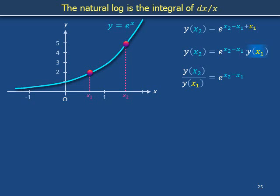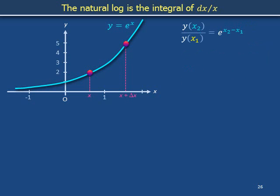Call the horizontal distance between x1 and x2 delta x, so that the figure is relabeled with x1 renamed as x and x2 renamed as x plus delta x. Updating the equation in accordance, we have y on x plus delta x over y on x equals e to the delta x.